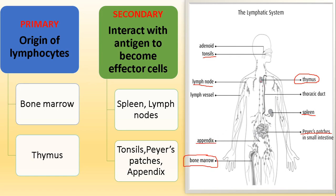Once formed in the thymus, lymphocytes move through the lymph vessels from the bone marrow along with the lymph, and they store themselves in the secondary lymphoid organs: spleen, lymph nodes, tonsils, Peyer's patches, and appendix. Whenever an antigen attacks the body and enters through any pore, these secondary lymphoid organs get activated, the lymphocytes get activated, and the immune reaction starts — primary if it is the first attack, secondary if it is a subsequent attack.